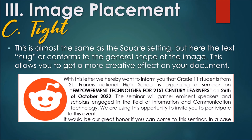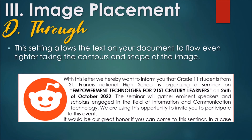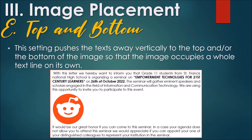C. Tight — This is almost the same as the square setting, but here the text hugs or conforms to the general shape of the image, allowing you to get a more creative effect on your document. D. Through — This setting allows the text on your document to flow even tighter, taking the contour and shape of the image. E. Top and Bottom — This setting pushes the text away vertically to the top end or the bottom of the image so that the image occupies the whole text line on its own.